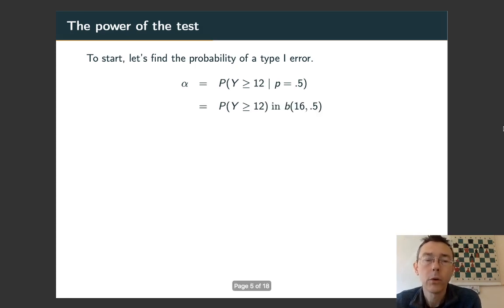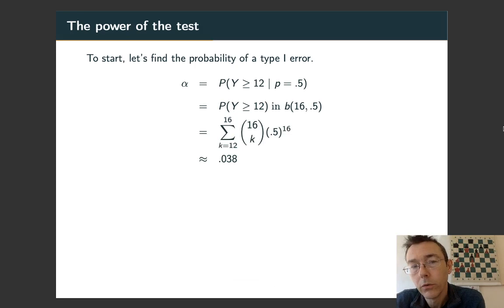So here we're in a binomial distribution. We're doing 16 draws with a probability of success of 0.5. So what are the chances that we get at least 12? Here we're going to use the binomial PMF. We evaluate it for 12 successes, 13 successes, etc., up to 16. Add all that up and we get 0.038. So that's the probability of a type I error, the significance level of the test.